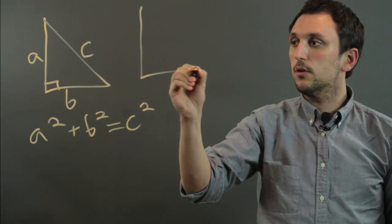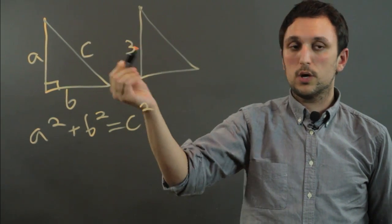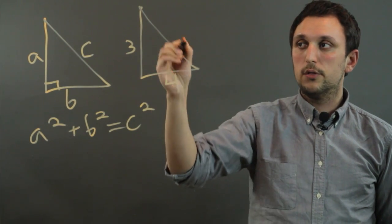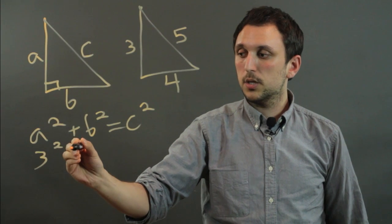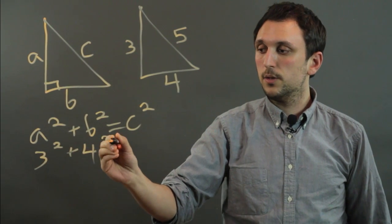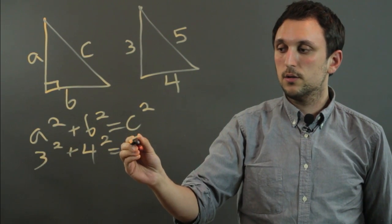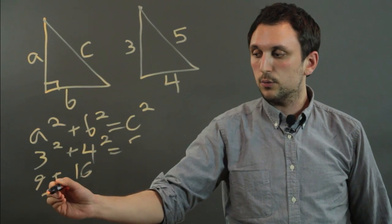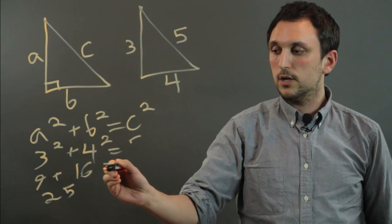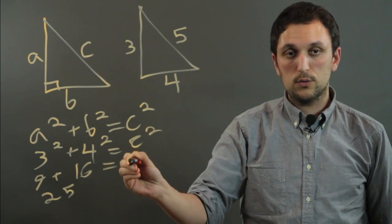So if we have a triangle that has a length of 3 and a length of 4, the third length is going to be 5 because 3 squared plus 4 squared equals 5 squared. That's basically 9 plus 16 equals 25, which equals C squared.